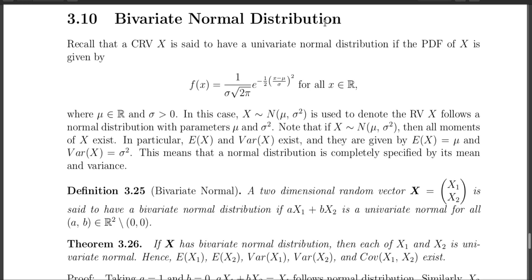Before going into the definition of the bivariate normal distribution, let us first recap the univariate normal distribution. Recall that the univariate normal distribution is a continuous distribution, and its PDF is given by an expression where the parameters mu belongs to R and sigma has to be greater than 0. We use the notation that X follows normal with mu and sigma square.